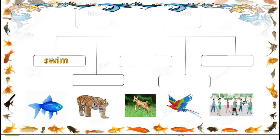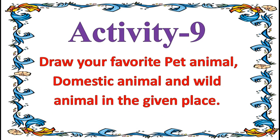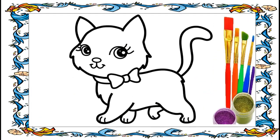Now let's move to activity number 9: draw your favorite pet animal, domestic animal, and wild animal in the given place. I have given here a pet animal — cat. You have to draw your favorite pet animal, domestic animal, and wild animal. Thank you, children.